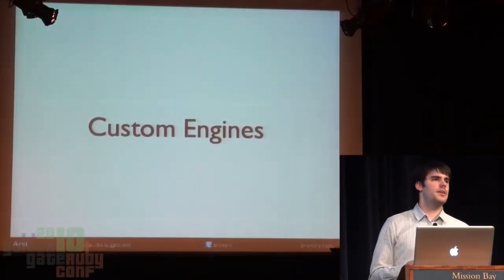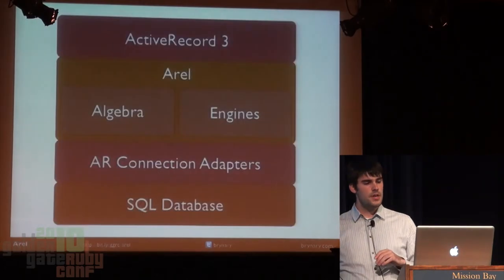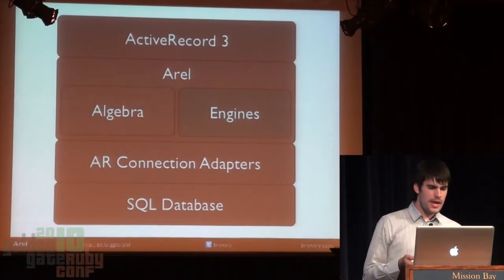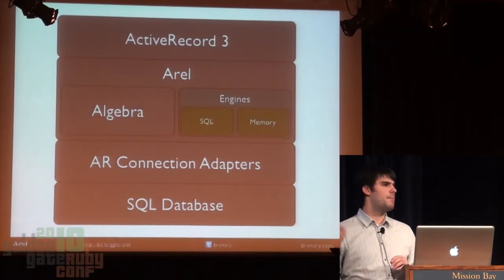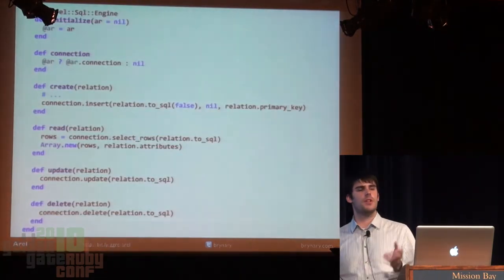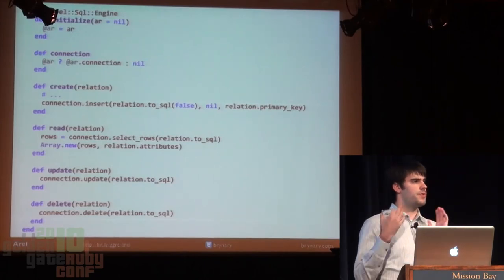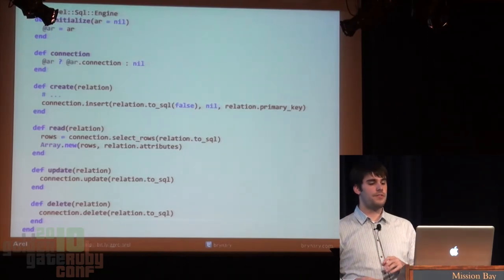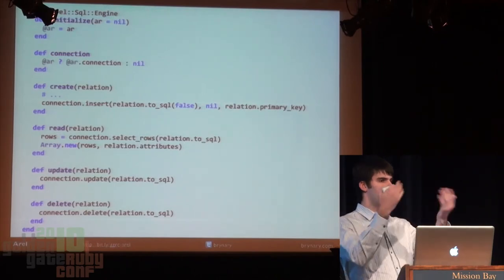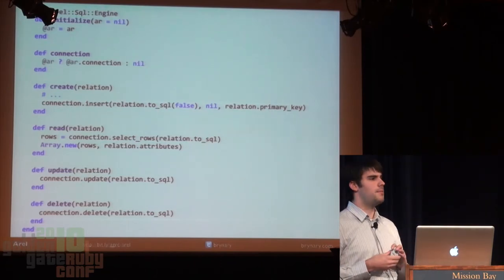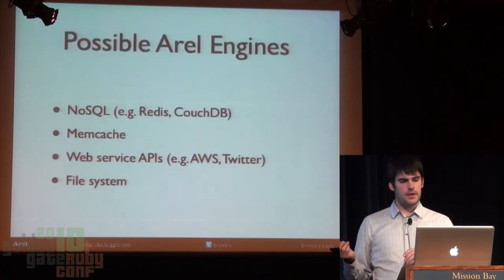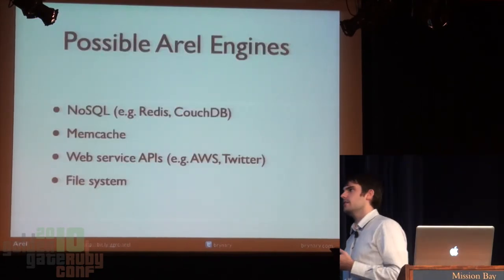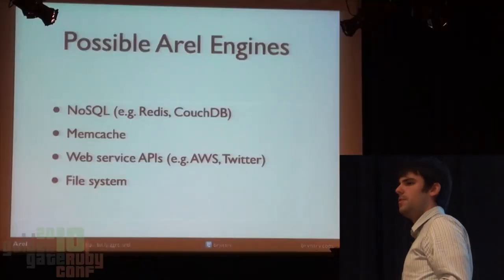The next thing in the future possibilities section is custom engines. We saw that AREL is broken down into algebra and engines. AREL actually ships with two engines: a SQL engine and a memory engine. Each engine implements CRUD — given a relation, an engine must understand how to create, read, delete, and update records. Since AREL already supports modular engines, you can imagine AREL eventually supporting engines which are not just SQL or memory — things like NoSQL stores, Memcache (which is really just memory in another process), and even the file system.